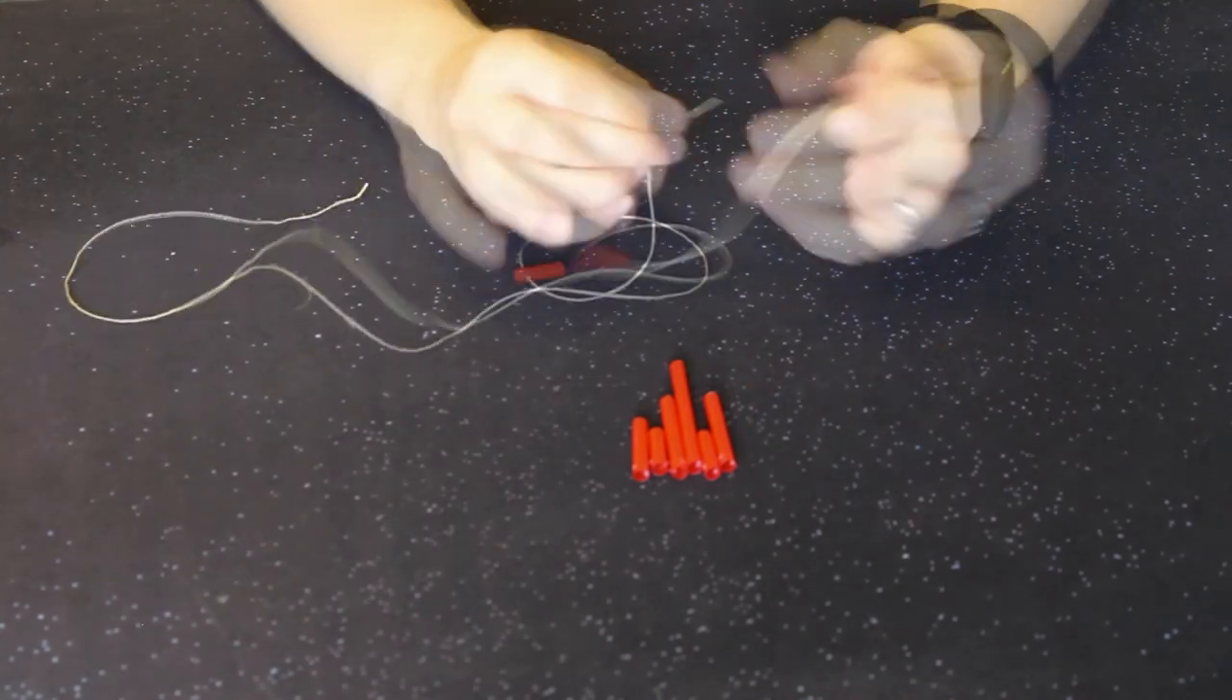Next, lay out all of your straw segments in the order they should go onto your string. Measure your string and cut a segment long enough to fit over your head once it has been tied. Using the end that has been glued, put your straw segments on in order. Move all of the straw segments to the center of the string and tie a close knot on either end of your design. This will keep them in place.